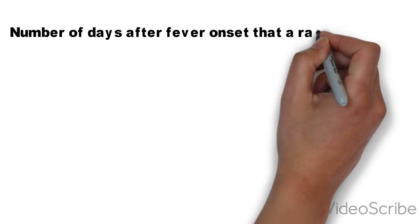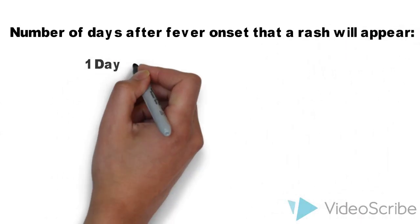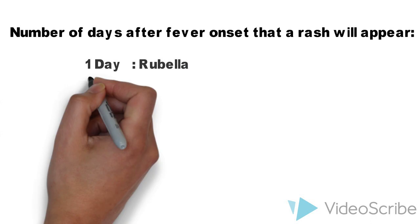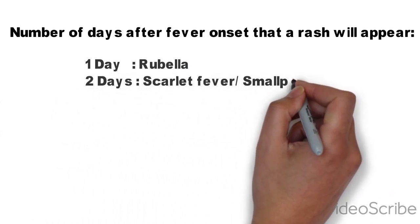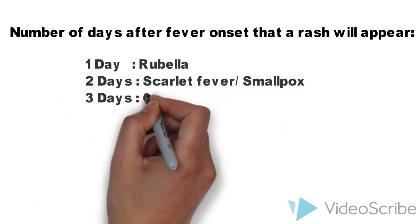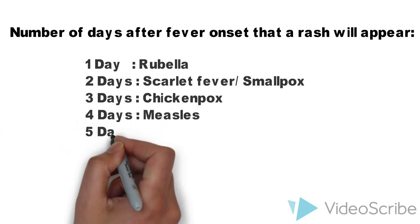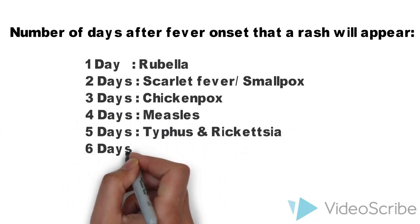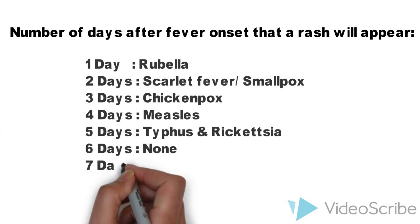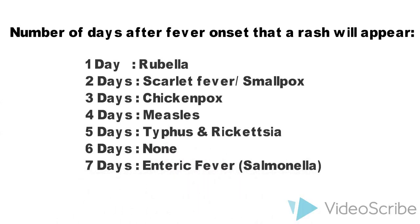The number of days after fever onset that a rash will appear is: 1 day for rubella, 2 days for scarlet fever or smallpox, 3 days for chicken pox, 4 days for measles, 5 days for typhus and rickettsia, 6 days for nothing, and 7 days for enteric fever.